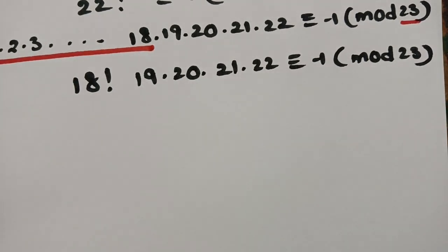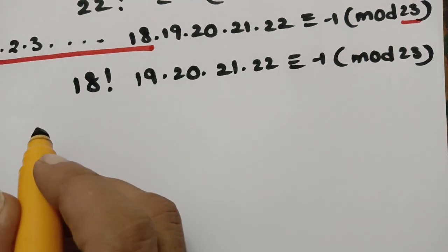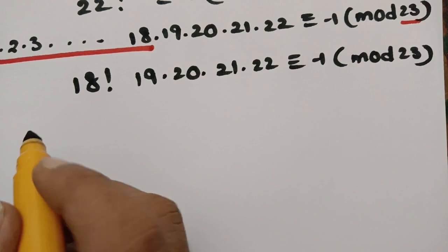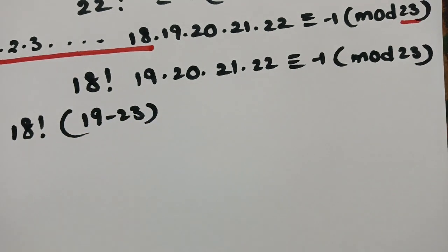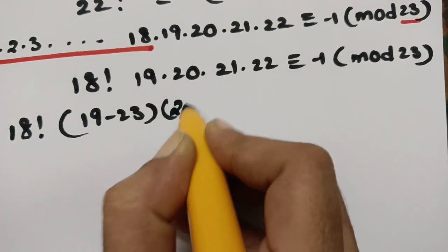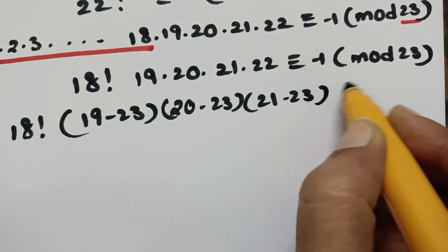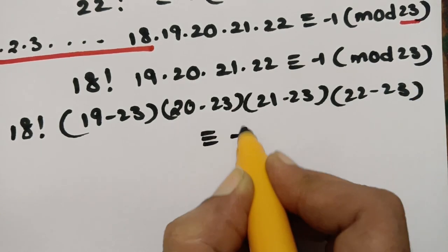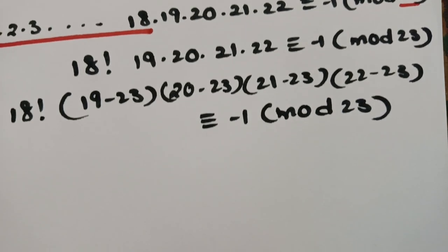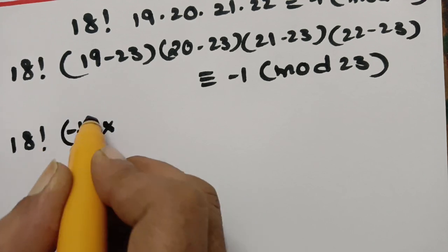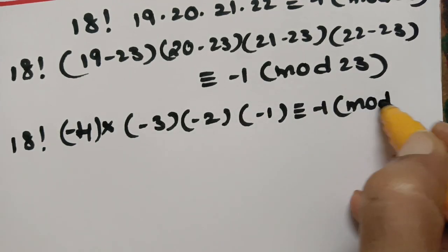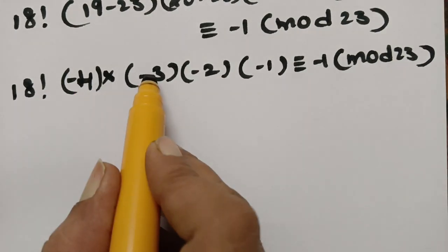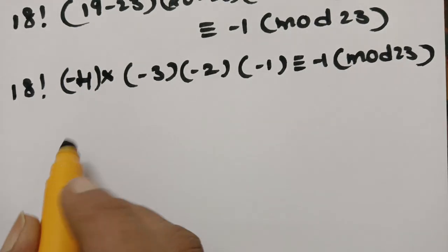Using the property that A ≡ B (mod M) means M divides (A − B), we replace each factor: 19 ≡ 19 − 23 = −4, 20 ≡ −3, 21 ≡ −2, 22 ≡ −1. So 18! × (−4) × (−3) × (−2) × (−1) ≡ −1 (mod 23). With four negative signs, the product becomes positive: 18! × 24 ≡ −1 (mod 23).